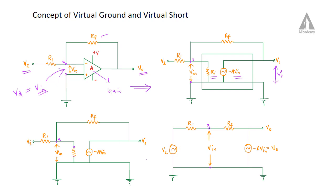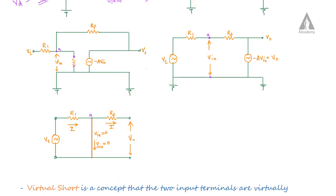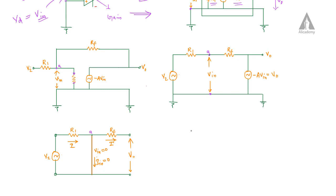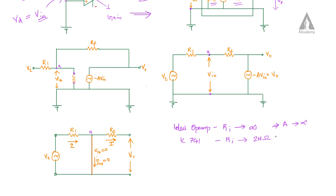For an ideal op-amp, the input impedance is infinite. The input impedance is on the order of 2 megaohms. For an ideal op-amp, the open loop gain is on the order of 10 raised to the power of 5.